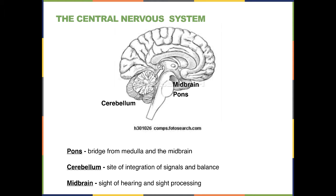The pons is the bridge between the medulla and the midbrain and has many nuclei that control vital functions. The midbrain is the area of both sight and hearing processing — the cranial nerves responsible for auditory and visual stimulation come into the midbrain and are processed there before being sent up to higher functions. The cerebellum is the site of integrating signals and balancing various signals, and when it is damaged, a person has problems balancing their muscular movements.